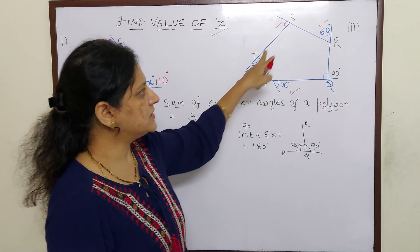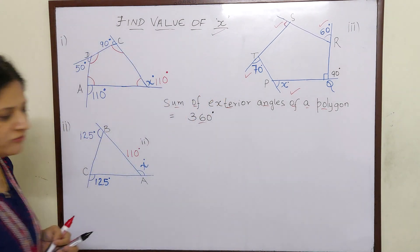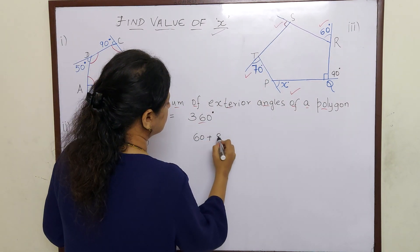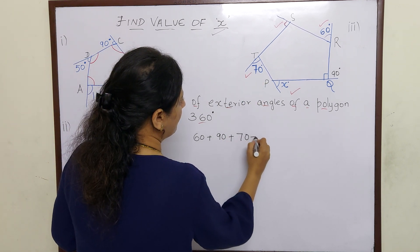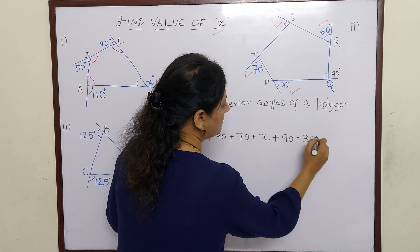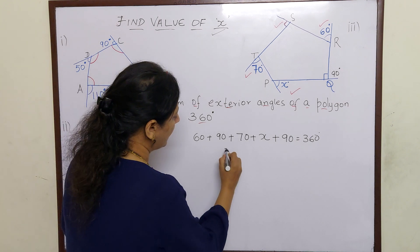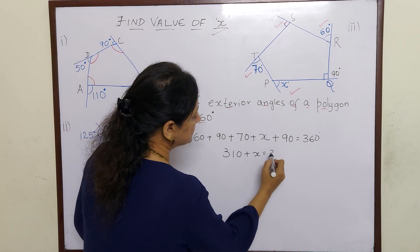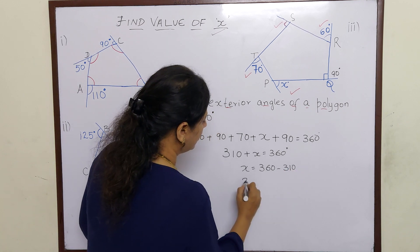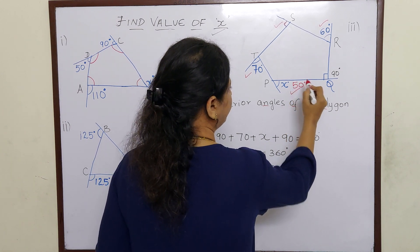So out of the 5 exterior angles, we now have all 4 known values. We just add them and find x. The first angle is 60, plus 90 (right angle), plus angle T which is 70, plus angle Q which we found is 90, plus angle P which is x — all together equal 360 degrees. So 310 plus x is equal to 360, therefore x is equal to 360 minus 310, and x is equal to 50 degrees.